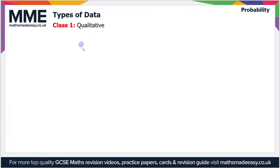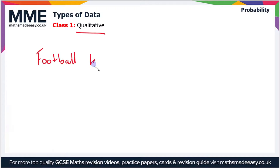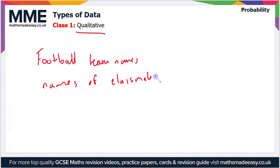The first class we'll look at is qualitative data. Qualitative data is essentially any form of worded data — anything that's not number based. Examples include football team names, names of classmates or friends, and types or breeds of dog. A quick point to note is that qualitative data is sometimes called categorical data, but essentially they're the same thing.